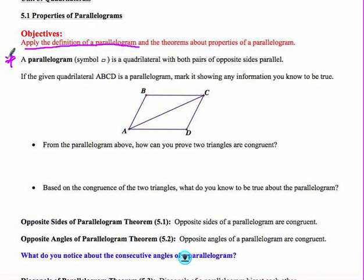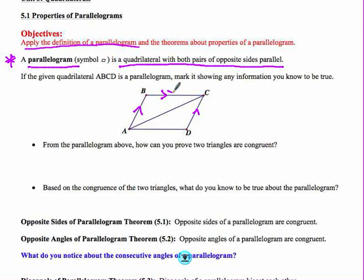By definition, a parallelogram is a quadrilateral with both pairs of opposite sides parallel. Here we have a diagram of a given parallelogram, and we can begin by marking the parallel pairs of sides. With diagonal AC drawn, we have alternate interior angles on both sides of the diagonal, and we also have side AC as a reflexive side.